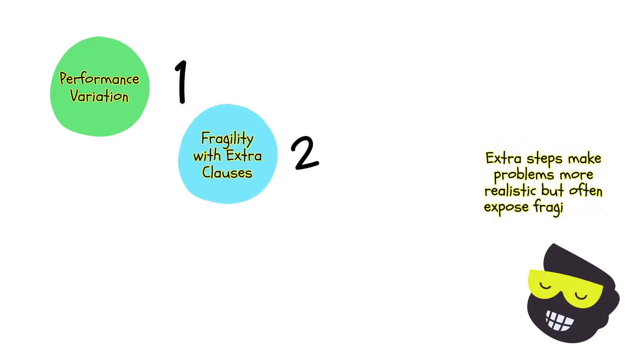Then we have fragility with extra clauses. Adding extra steps or clauses to problems, like after 25 minutes the price changes again, makes them more realistic, but also trips up LLMs. Accuracy doesn't just drop a little, it often plummets, suggesting the model's chain of thought may be fragile.